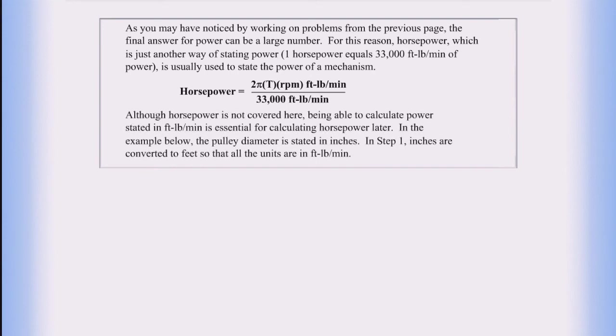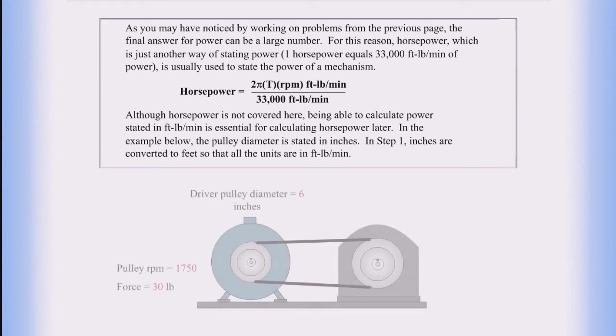Although horsepower is not covered here, being able to calculate power stated in foot-pounds per minute is essential for calculating horsepower later. In the example below, the pulley diameter is stated in inches. In step one, inches are converted to feet so that all of the units are in foot-pounds per minute.